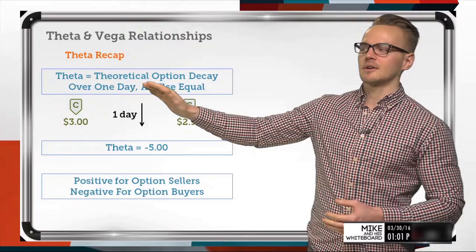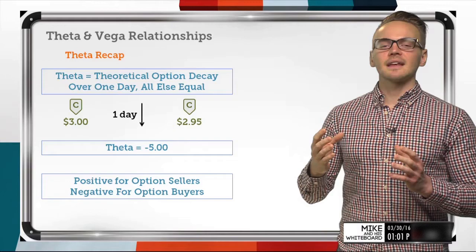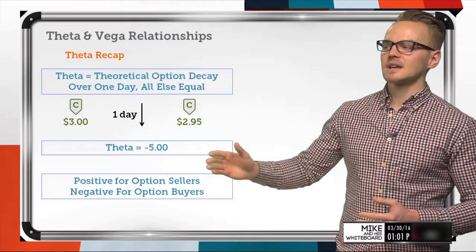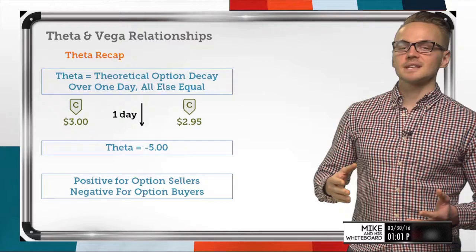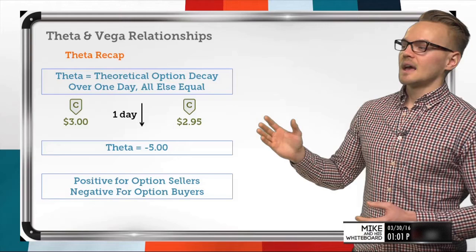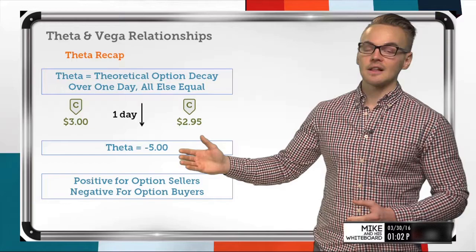Theta is a metric we can look at, and having a larger theta number when we're selling premium is definitely better, but it's hard to look at it as a realistic number we should expect to see come down in our options price. For example, if I'm looking at a long call worth three dollars with a theta value of negative five, and I hold everything else equal — price movement, volatility — and one day passes, I should see my option price decrease by five cents.